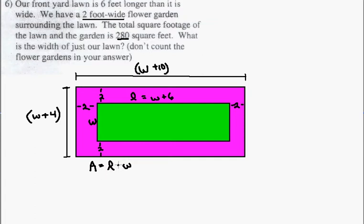That's an L. So our length, so our length of the entire garden and lawn is w plus ten, and our entire width of the lawn and garden is w plus four, and it's given to us that that area is 280.